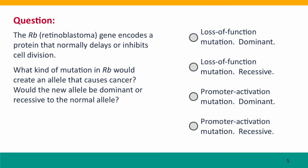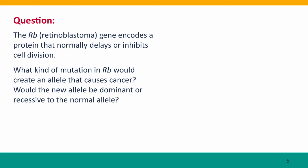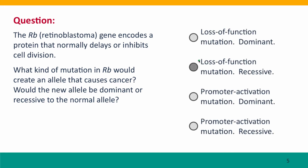So here's a question that should take you back to Module 4, but just think this question through. Given that the retinoblastoma gene encodes a protein that normally delays or inhibits cell division when cells shouldn't divide, what kind of mutation in RB would create an allele that causes cancer? Would it be a loss of function mutation or a promoter activation mutation? And would that mutation be dominant or recessive to the normal allele? The mutation that's needed is a loss of function mutation, and it would be expected to be recessive to the normal allele.